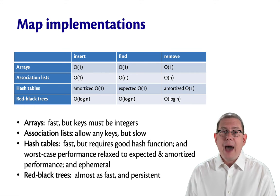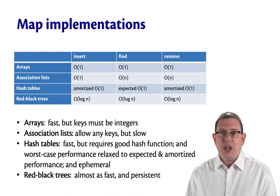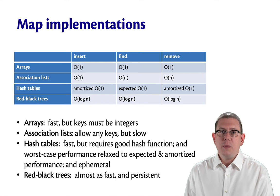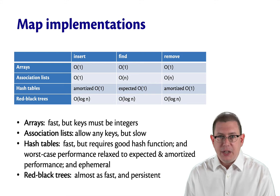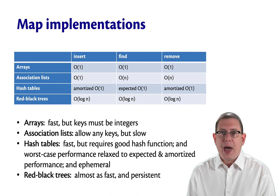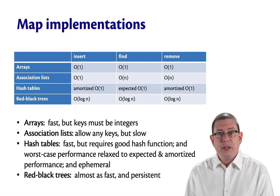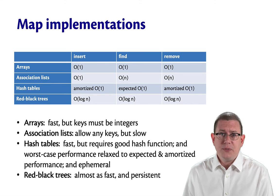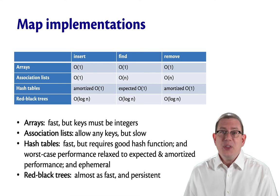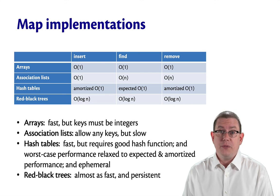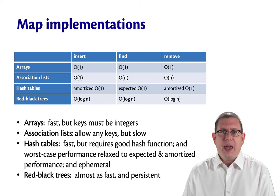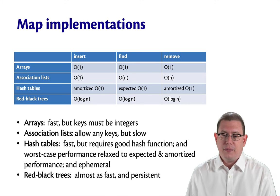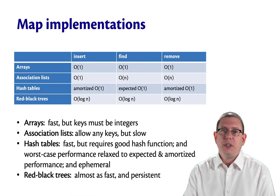That means we have an asymptotic efficiency that's in between hash tables and association lists. But logarithmic is way better than linear time, so the performance of red-black trees is going to be way closer to hash tables than to association lists as inputs get very large. We've got something that's almost as fast as a hash table with these functional red-black trees, but they're persistent — you get the additional ability to keep around old values of the data structure, something you didn't get with hash tables without explicitly creating copies.